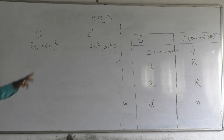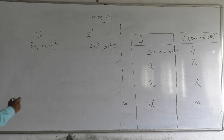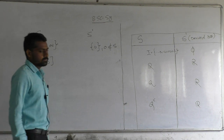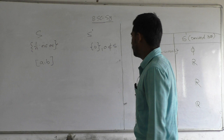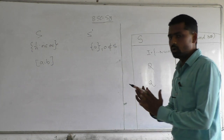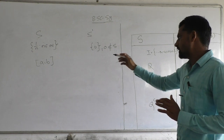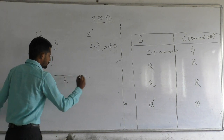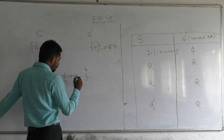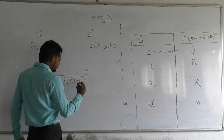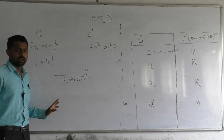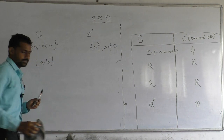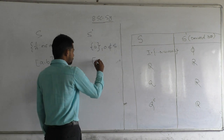Now consider the closed interval [a, b]. Every element of [a, b] is a limit point: if we choose any point x and make a neighborhood (x - δ, x + δ), this neighborhood must contain infinitely many points of the interval. Therefore every point of the closed interval [a, b] is a limit point, so the derived set of [a, b] is [a, b] itself.